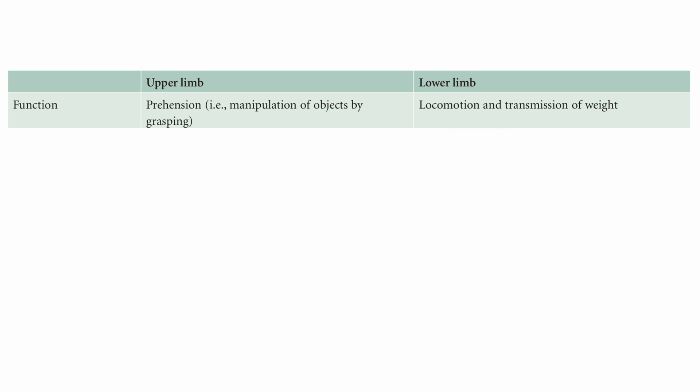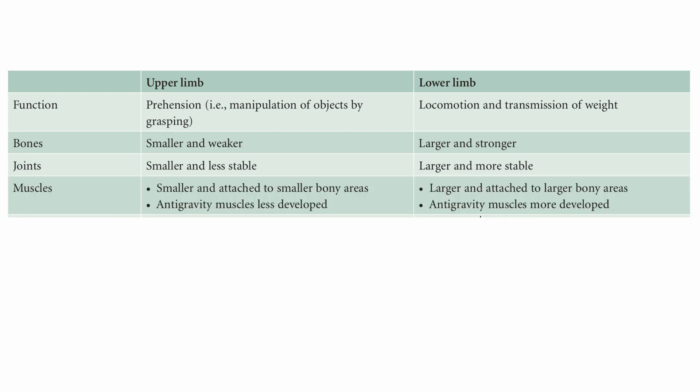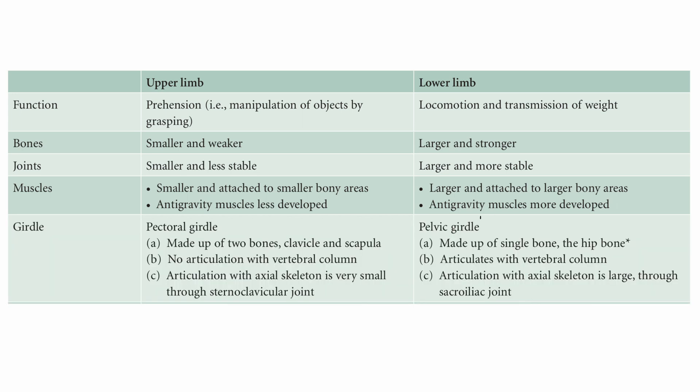There are important differences between the upper and lower limbs. The function of the upper limb is predominantly prehension — manipulation of objects by grasping — while the lower limb is designed for locomotion and transmission of weight. Bones of the upper limb are smaller and weaker, whereas those of the lower limb are larger and stronger. Joints of the upper limb are smaller and less stable, while those of the lower limb are larger and more stable. Muscles in the upper limb are smaller and attached to smaller bony areas, while anti-gravity muscles of the lower limb are more developed as they bear weight.